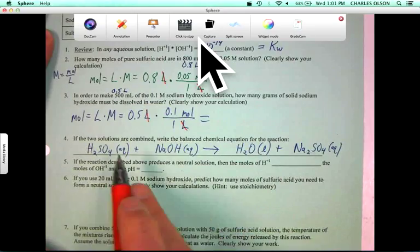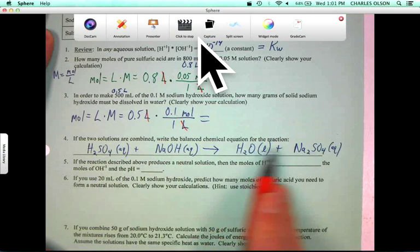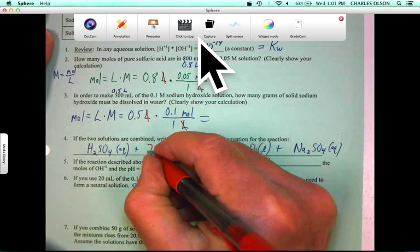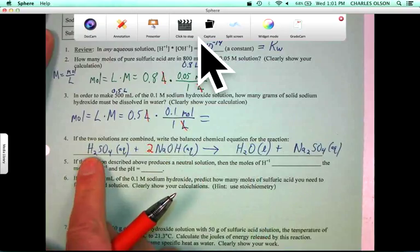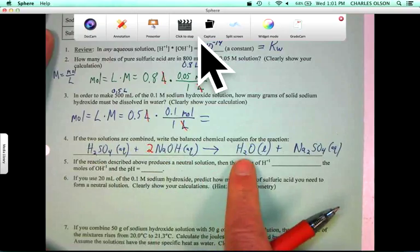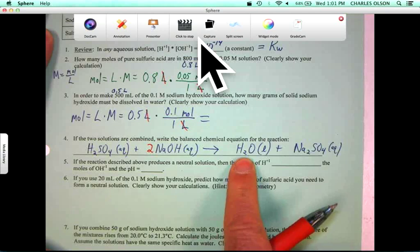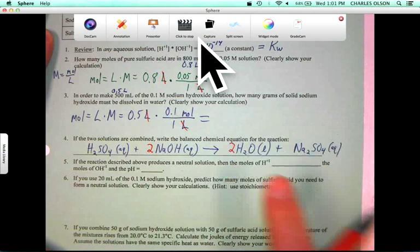So, let's see, we're going to need two sodiums here, and now I actually think it's balanced, because we've got the two H pluses and two OH minuses, making two H2O. So, there we go. Now, that's balanced.